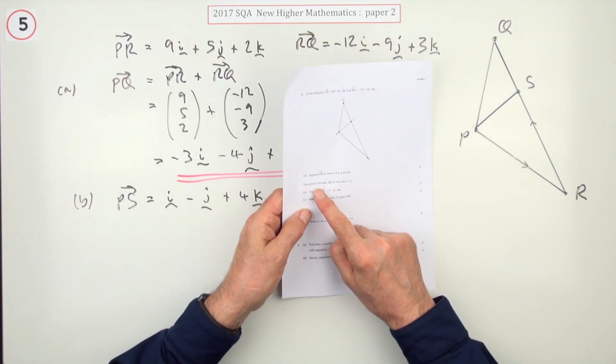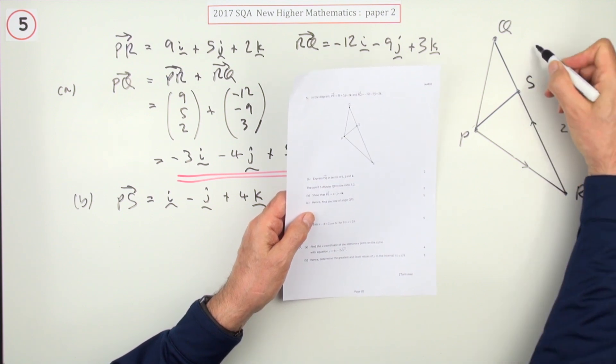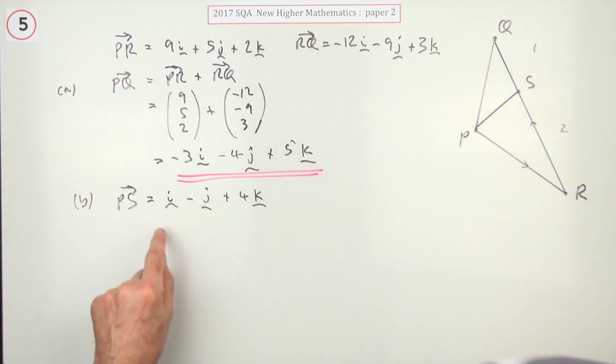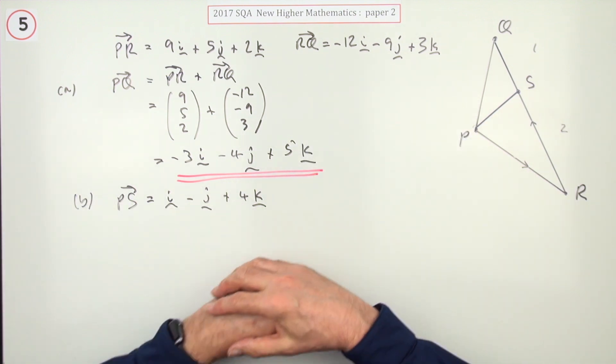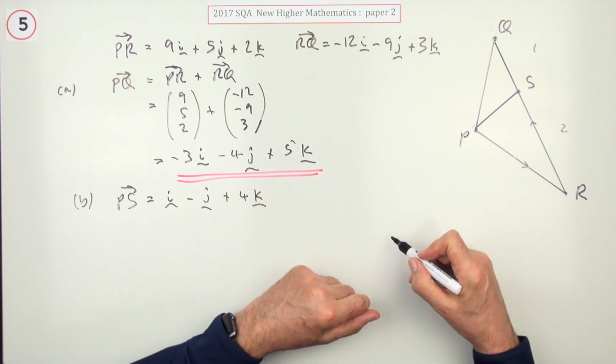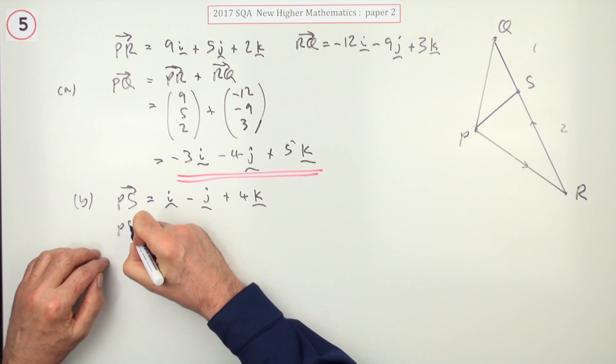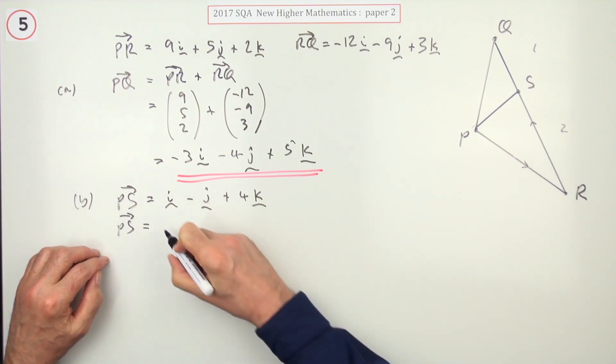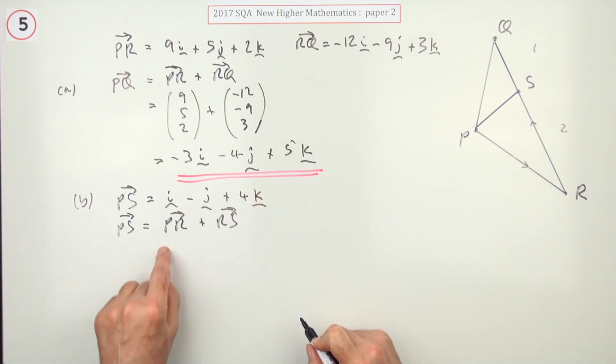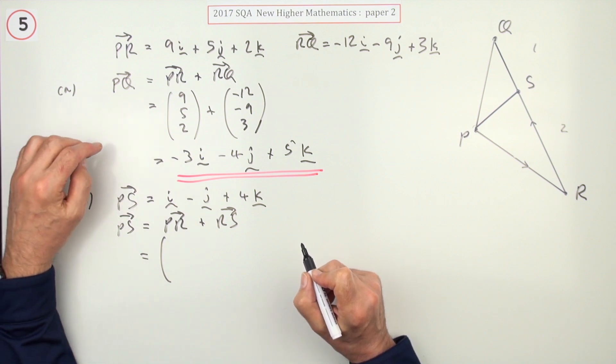Now part B says S divides QR in the ratio of two to one, two steps to one step, so that PS is given again by this vector written in terms of the unit base vectors. To go from P to S, I'll go first from P to R and then from R to S. P to R, I know already. I'll just put this down as column vectors here because P to R was that 9, 5, 2.